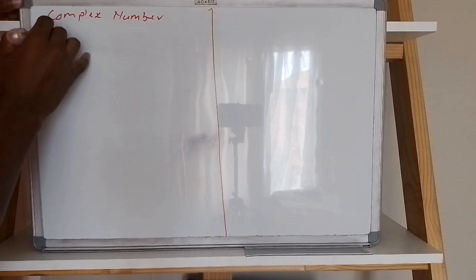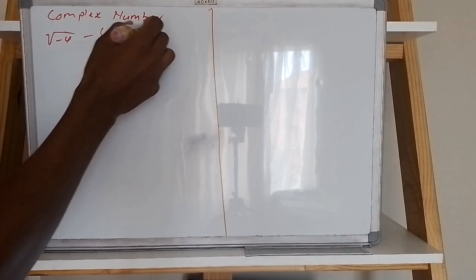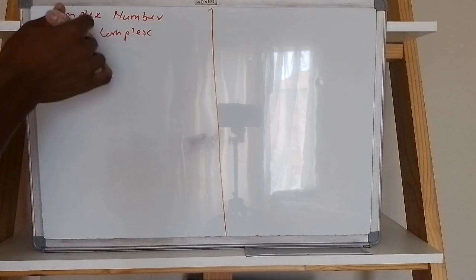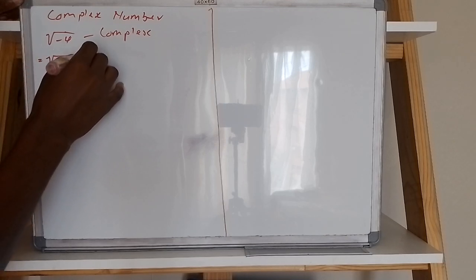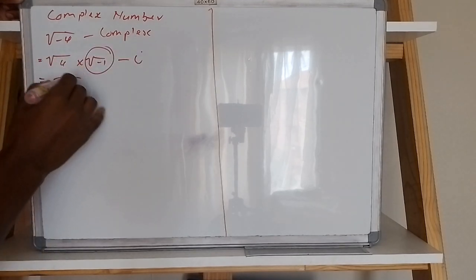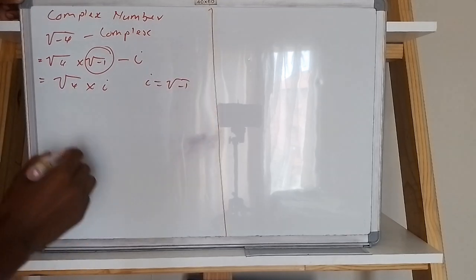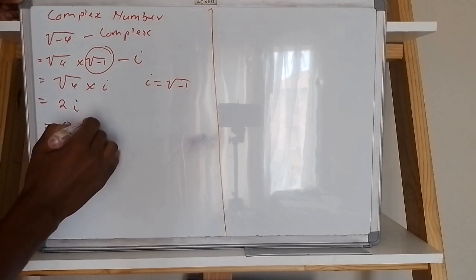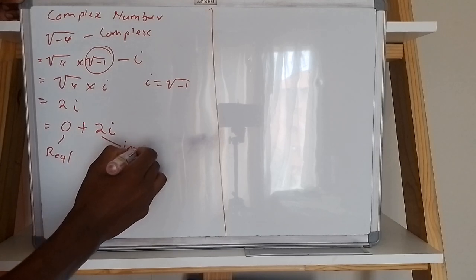In simple definition, if you have something like the square root of negative sixteen, this is part of the complex number because at the end of the solution you will have a real part and an imaginary part. You can write this as four multiplied by the square root of negative one, which gives you four times i, since i equals the square root of negative one. This is the imaginary part, and you also have the real part.